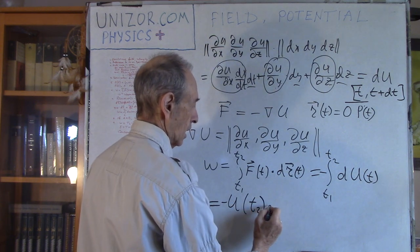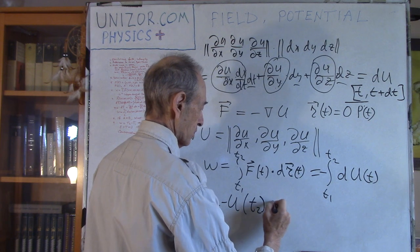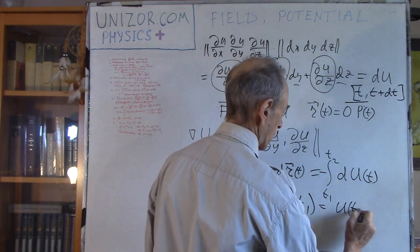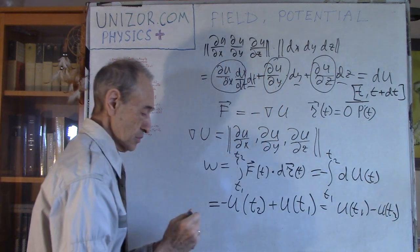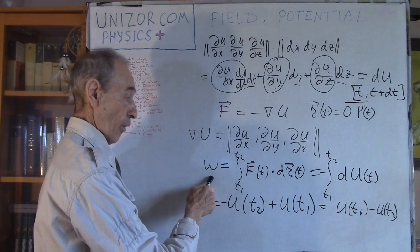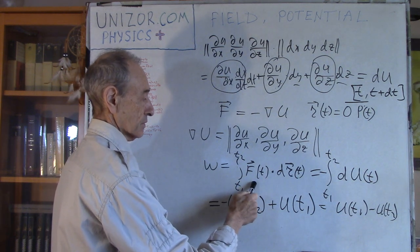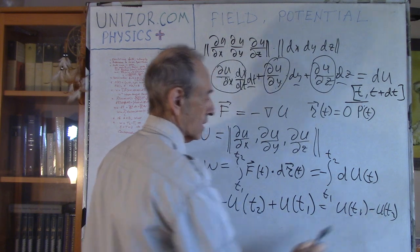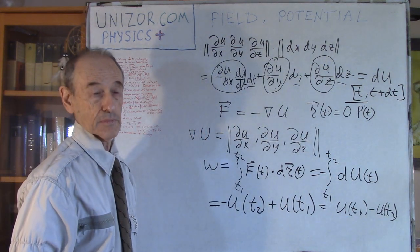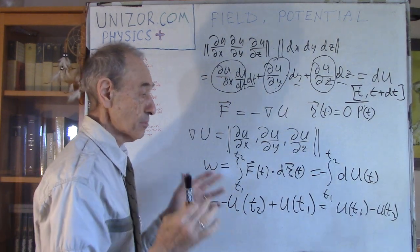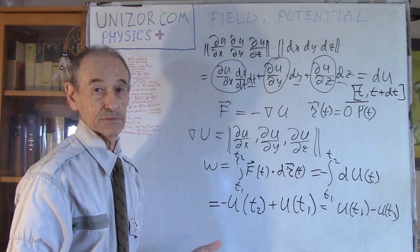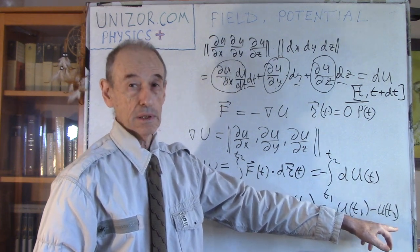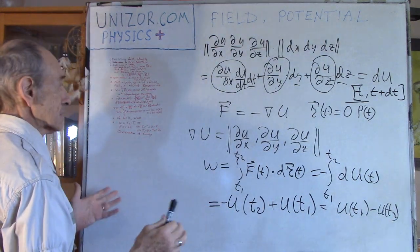With minus times minus giving plus, the work equals U(t1) - U(t2). So as we see, this integral - which is the work done by the field force along the trajectory - is actually the difference in potential between the beginning and the end. This is very important: the work does not depend on the trajectory itself; it depends only on the potential at the start and end points A and B.